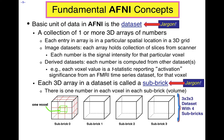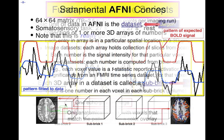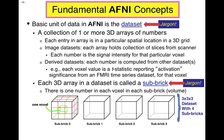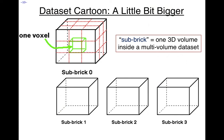Below is a cartoon of a dataset with four volumes, numbered 0, 1, 2, and 3 — because in AFNI counting starts at 0. Here's a cartoon of a dataset where the voxel grid is three voxels on a side, which isn't very high resolution. Real grids are more like 64×64×30 or perhaps 128×128×50. It depends on your scanner, what you're looking for, and so on.